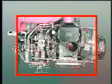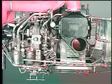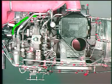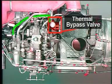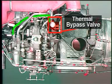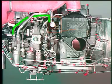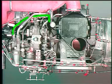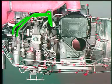The pressurized oil from the supply pump is routed to the thermal bypass valve, which is installed on the oil cooler. If the oil is cold, the thermal bypass valve is open and the oil flows directly to the oil supply filter.